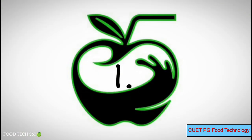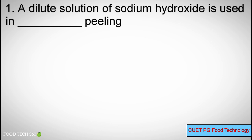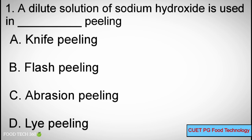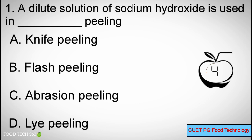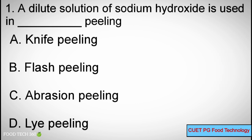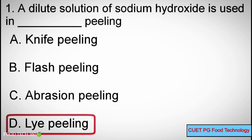Question number 1. A dilute solution of sodium hydroxide is used in dash peeling. Options: A) knife peeling, B) flash peeling, C) abrasion peeling, D) lye peeling. Correct answer: D) lye peeling.